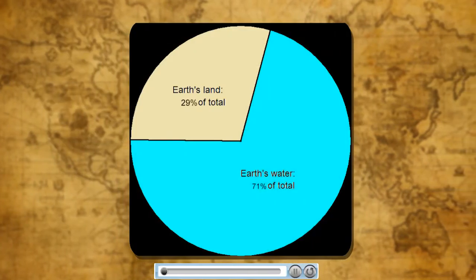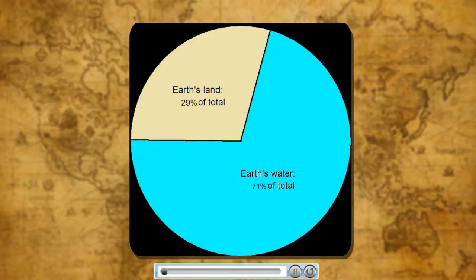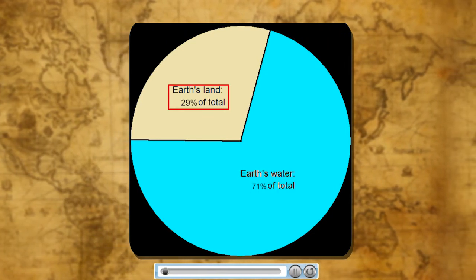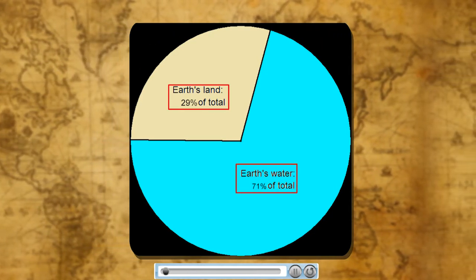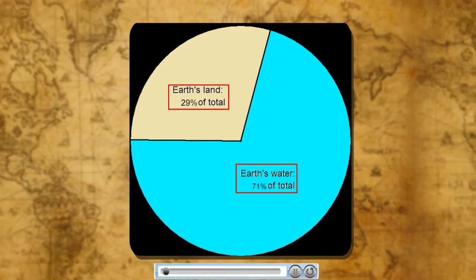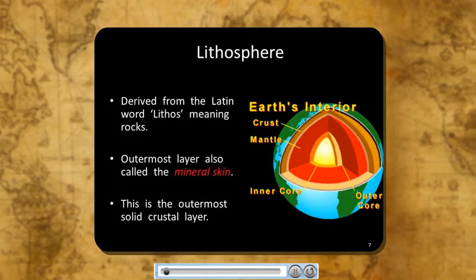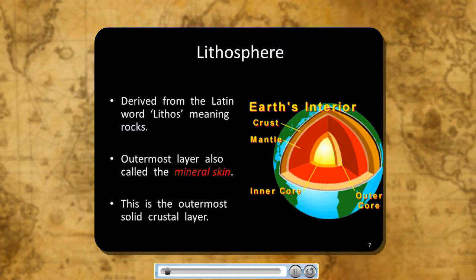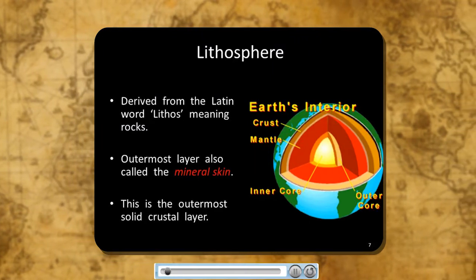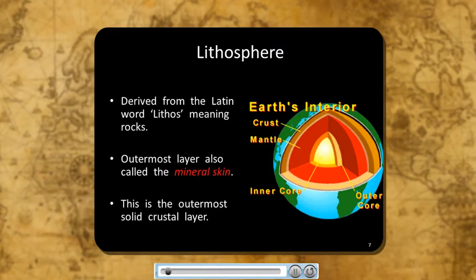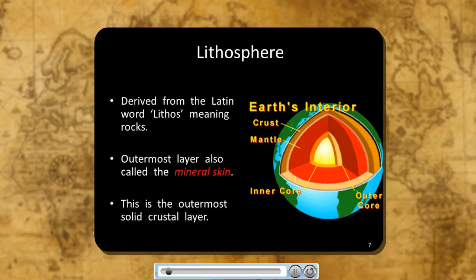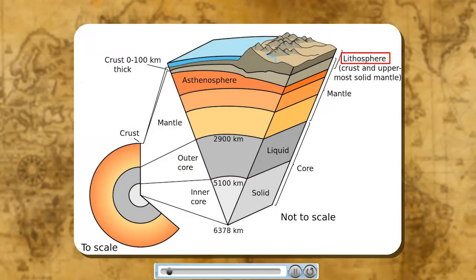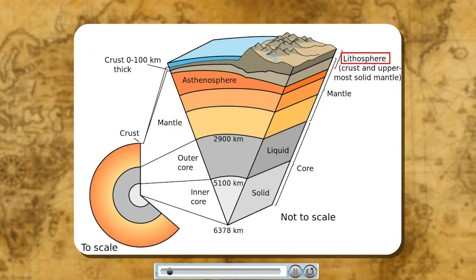The surface of the Earth is made up of land and water. Land covers about 29% and water about 71% of the Earth's surface. The word lithosphere is derived from the Latin word litho, which means stone or rock, and sphere which means realm or domain. Thus, the lithosphere is the upper solid layer of the Earth.